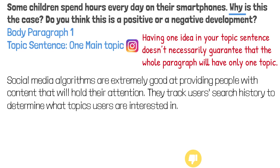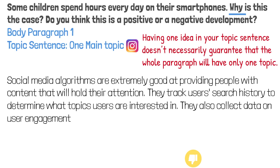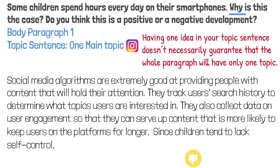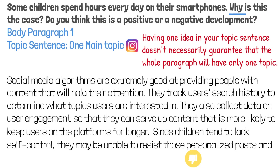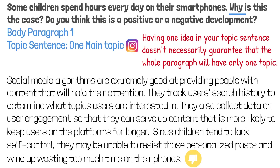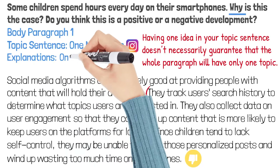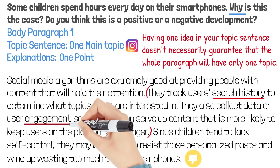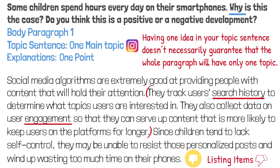Here is a bad example: 'They track user search history to determine what topics users are interested in. They also collect data on user engagement so that they can serve up content that is more likely to keep users on the platforms for longer. Since children tend to lack self-control, they may be unable to resist those personalized posts and wind up wasting too much time on their phones.' This seems like a good development of the topic sentence, but this part isn't as good as you think. It talks about both search history and engagement — that is listing items rather than developing the main topic.